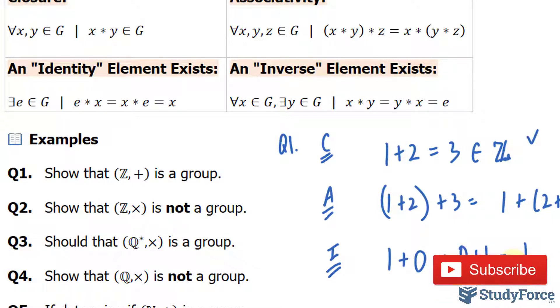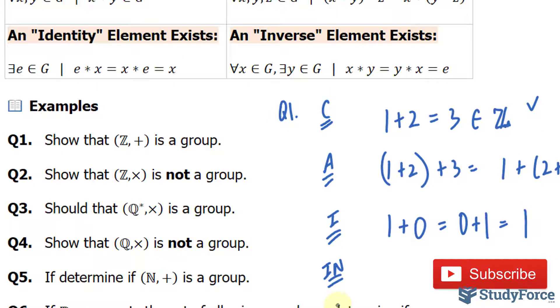Finally, the inverse. Since integers include both positive and negative numbers, and if we're choosing x to be 1, which is an element of Z, then 1 + (-1) gives us back our inverse, being 0. So for every positive integer, there exists a negative integer that will give us back our identity, 0.